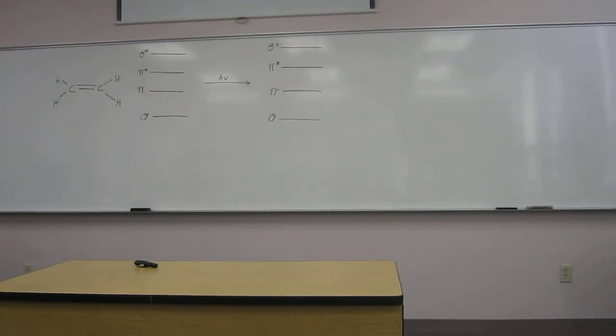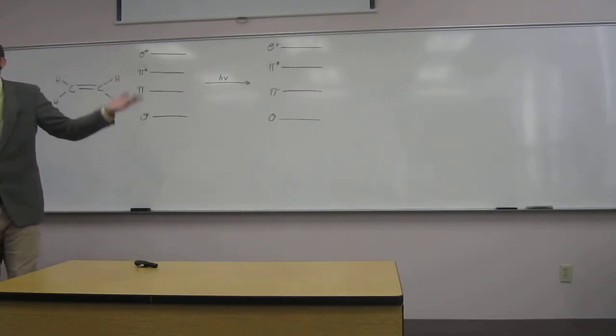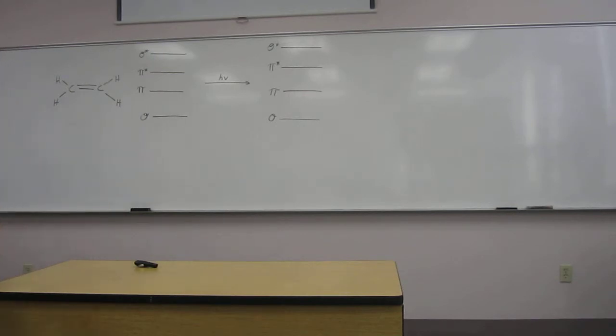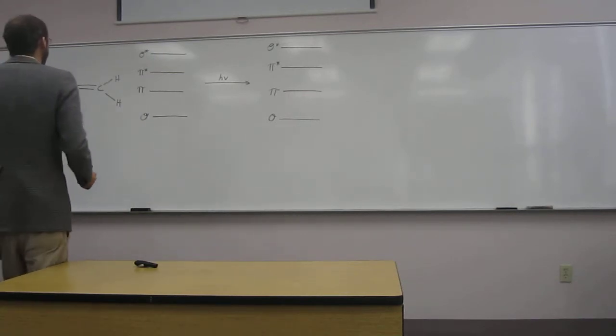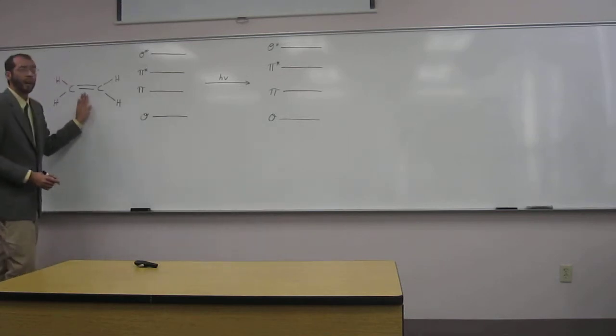So we're looking at this carbon-carbon double bond because those are the electrons that in the pi portion of that bond are going to be promoted with shining the light on them. So if you recall, a pi bond consists of four electrons,